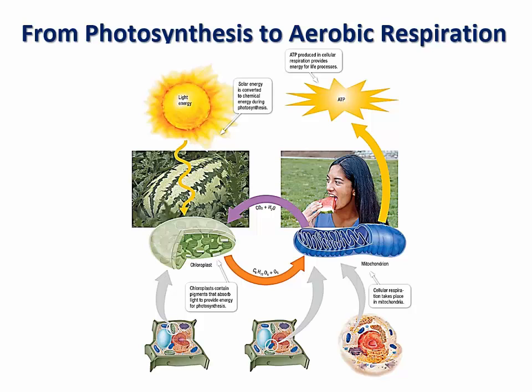Plants produce energy-rich compounds during the day using light energy, and at night, or when the light energy is not sufficient, plants rely on aerobic respiration through their mitochondria.